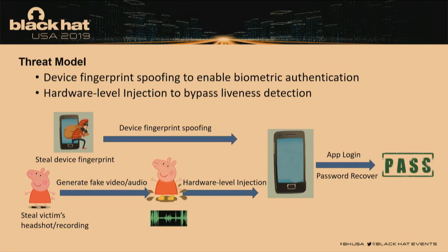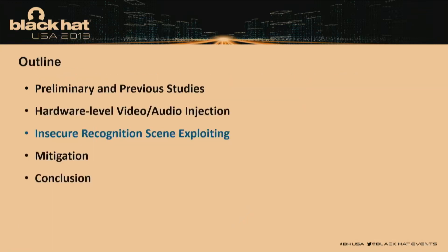The server collects local device fingerprint information, uploads it, and binds it to your account, then enables biometric authentication. If we can steal all this device information, we can forge the device and enable it in our controlled system. The general steps for device fingerprint spoofing are: reverse engineer the collection algorithm, steal the information, inject it into our control system, and enable the feature. Some information can be stolen without physically touching the victim's device.